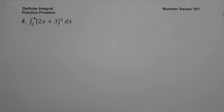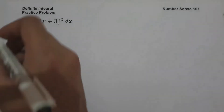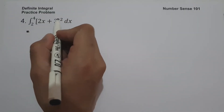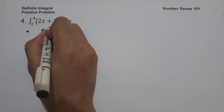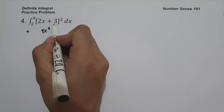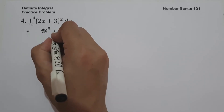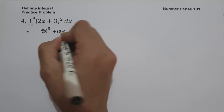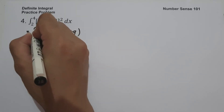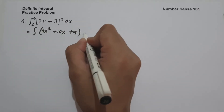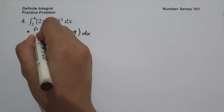For example 4, what is the anti-derivative of (2x plus 3) squared dx, evaluated from 2 to 4? We first expand the square of the binomial: 2x times 2x is 4x squared, 2 times 2x times 3 gives 12x, and 3 times 3 is 9. So we need the anti-derivative of 4x squared plus 12x plus 9 dx, evaluated from 2 to 4.